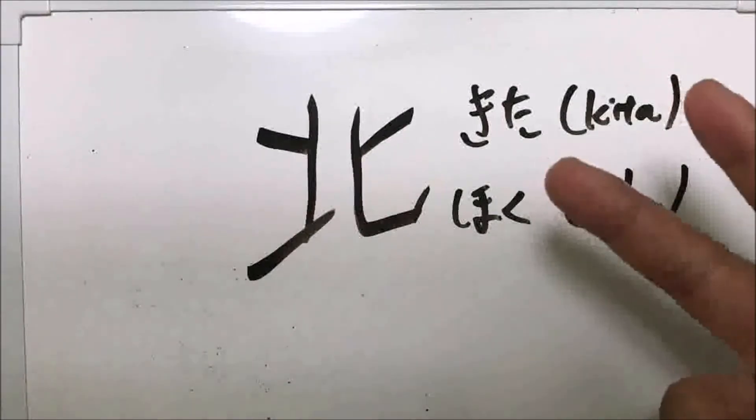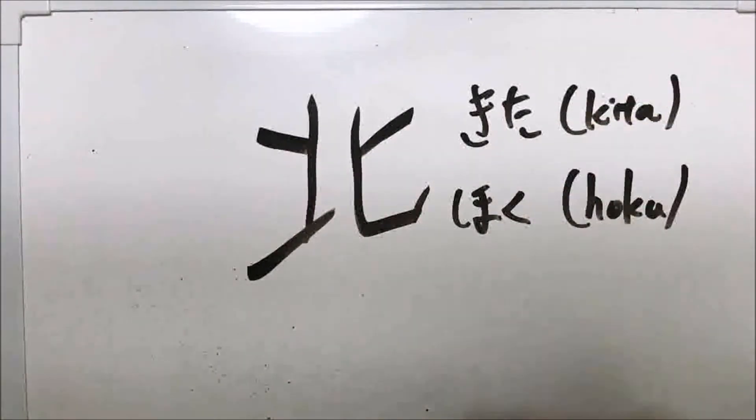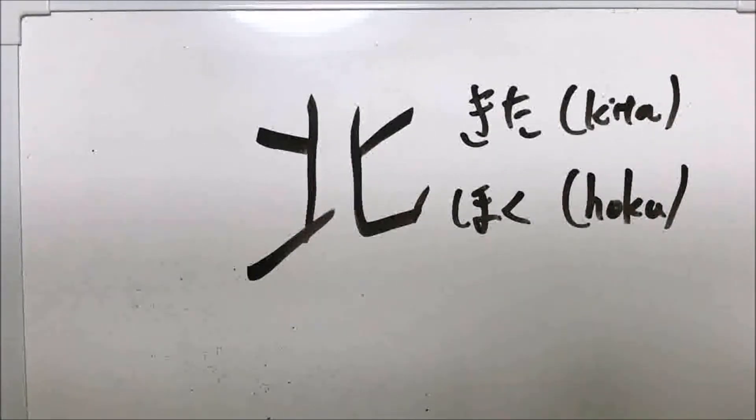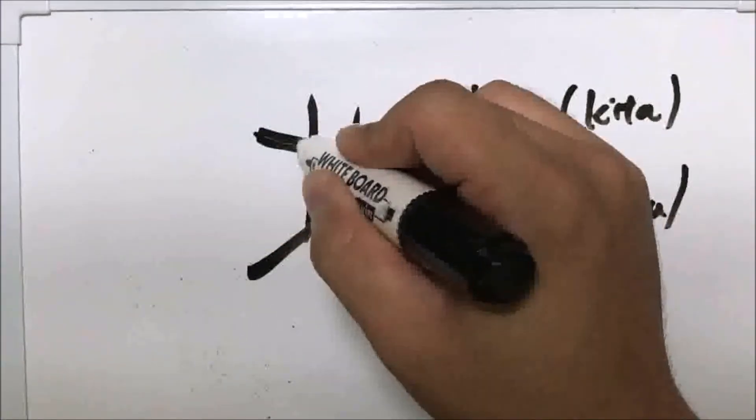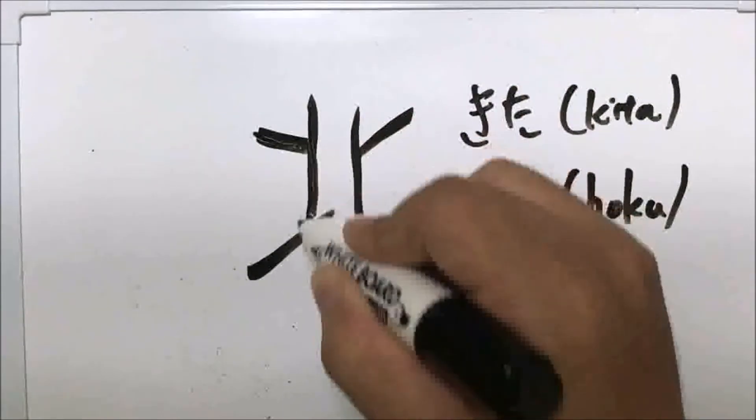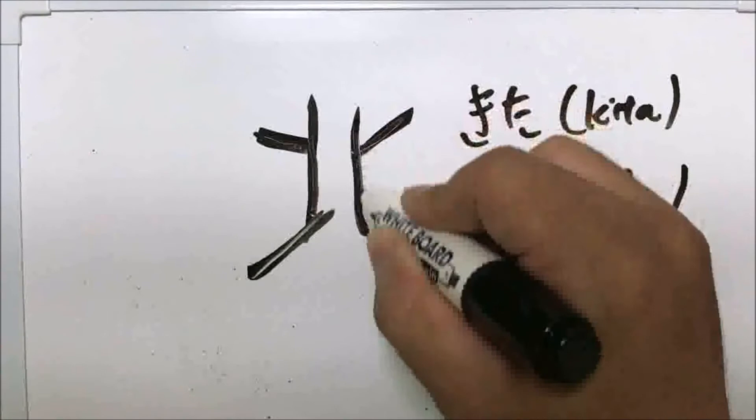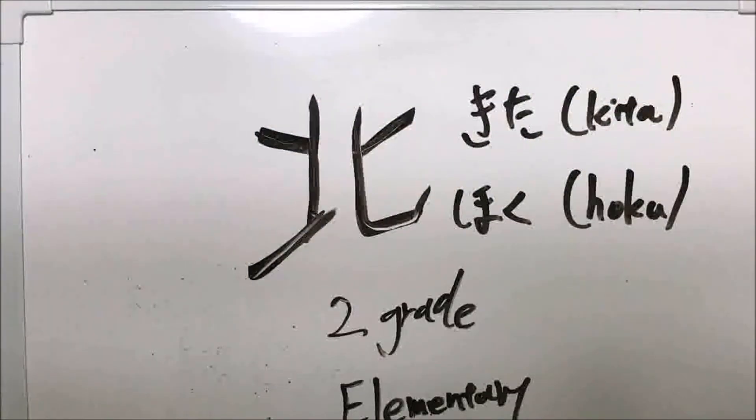Kanji has two readings: kita and hoku. Kita is kunyomi reading and hoku is onyomi reading. Please memorize both readings. And how to write: first, second, third, fourth, fifth. We learn this kanji in second grade in elementary school.